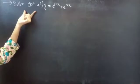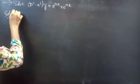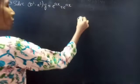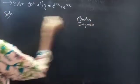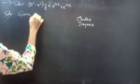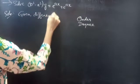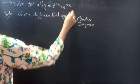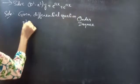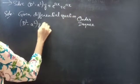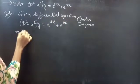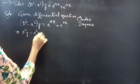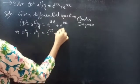Problem: solve (D² − a²)y = e^(ax) + e^(nx). Given differential equation: (D² − a²)y = e^(ax) + e^(nx). You can write this as D²y − a²y = e^(ax) + e^(nx).